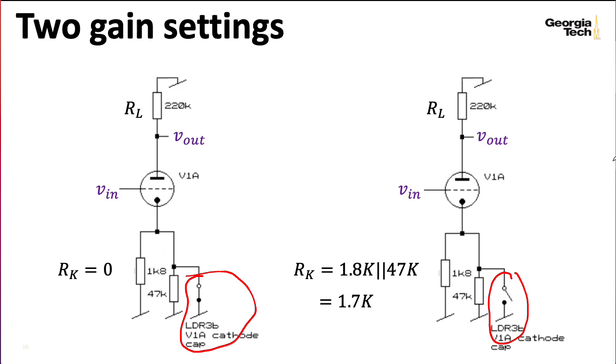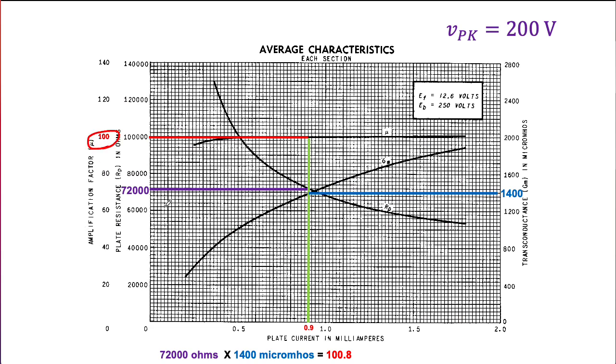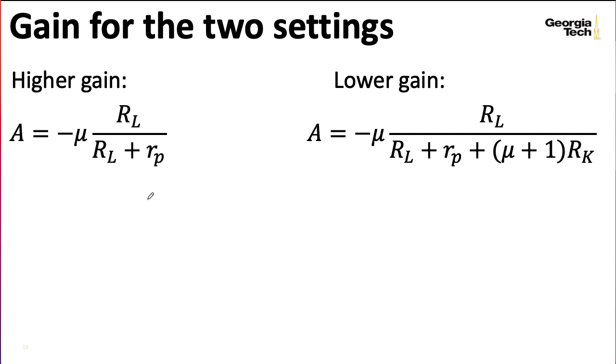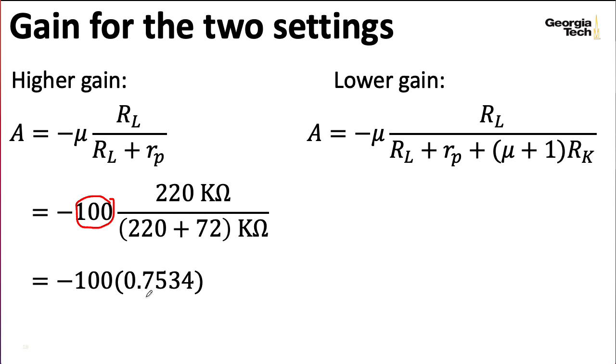Let's see, we have RL, we have our RKs. We need to know our mu, which is 100. And we need to know RP, which is 72K. All right. So if we plug those values into our gain formulas for the fully bypassed case, we get a gain of 100 from the triode itself, but we lose some of that. So going through the divider, we lose about 25% of that gain, and we're left with a gain of 75.34. This is inverting gain, so I have a minus sign in front of everything here.